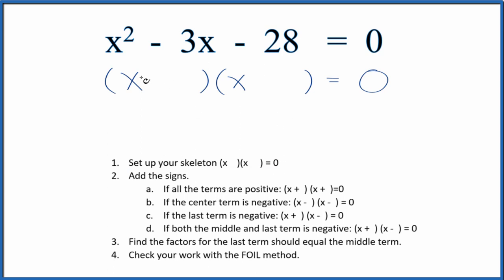Then I would add the signs into my skeleton equation. Here I have a negative term and a negative term. So the middle term and the last term, they're both negative. So I'm going to put a positive and a negative like this.